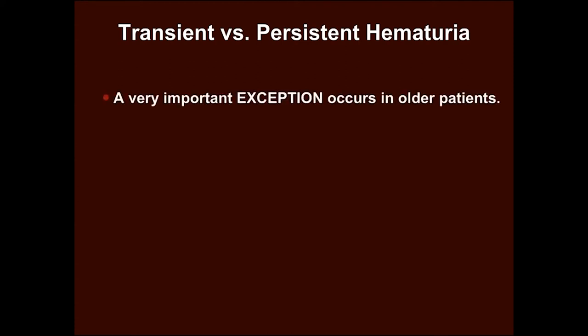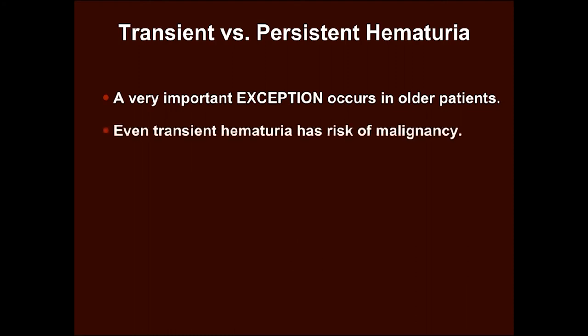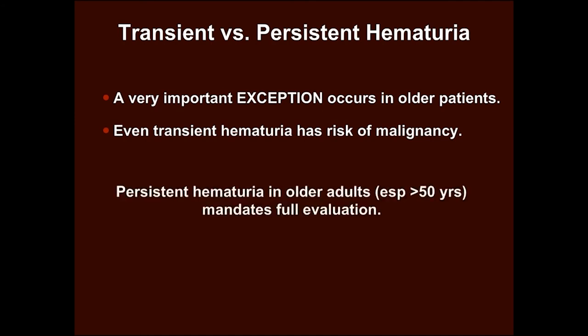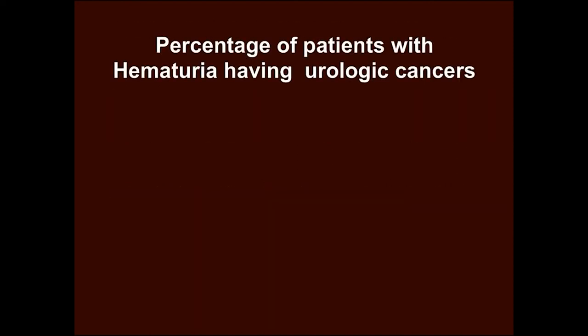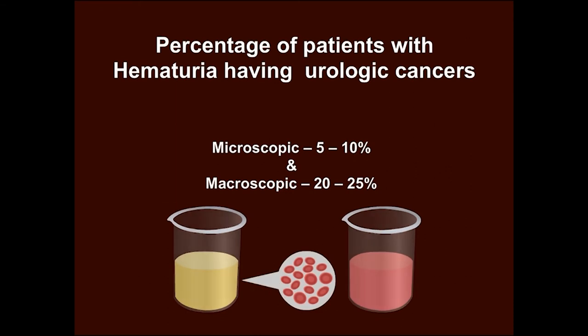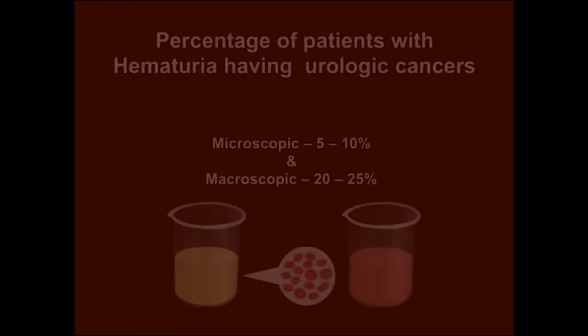A very important exception occurs in older patients — even transient hematuria carries a risk of malignancy. Persistent hematuria in older adults mandates full evaluation. Around 5-10% of cases presenting with microscopic hematuria will have an underlying urologic cancer, as compared to 20-25% of cases of macroscopic hematuria.